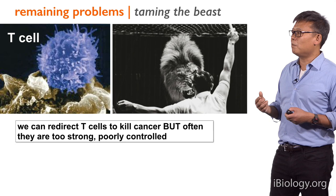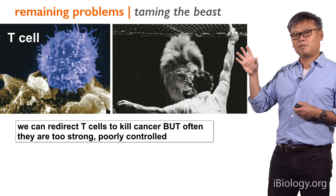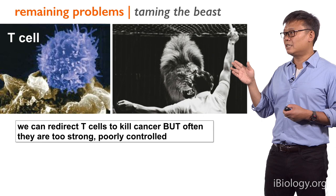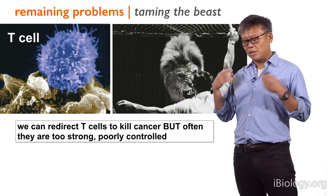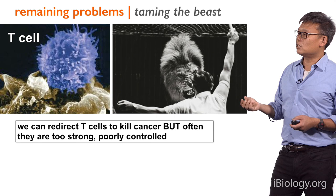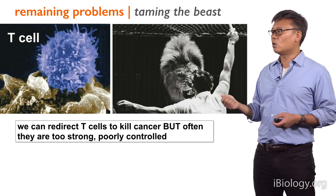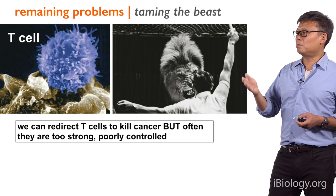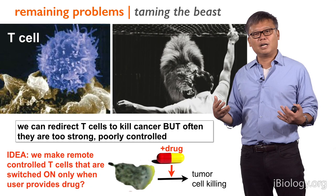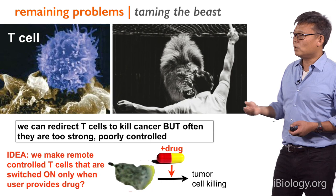This is tremendously exciting, but there are still problems. Although we can take T cells and redirect them, oftentimes there are many strong side effects because these cells are very strong in terms of their immune response — they secrete a lot of molecules called cytokines that lead to a big systemic immune response. So although we can redirect them, right now oftentimes they are too strong or poorly controlled. We really need to learn not only how to redirect this beast, but also how to tame the beast. This is where we have been trying to use synthetic biology to generate engineered T cells that show much more controlled behavior.